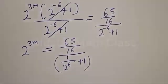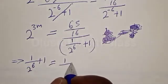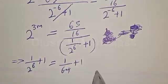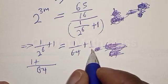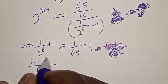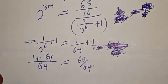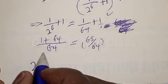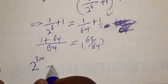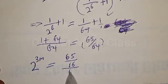Let's resolve this. We have 1 over 2 raised to power 6 plus 1. Now 2 raised to power 6 is 64, so 1 over 64 plus 1 gives us 1 plus 64 over 64, that is 65 over 64. Now let's substitute this into the equation: 2 raised to power 3m is equal to 65 divided by 16, divided by 65 divided by 64.